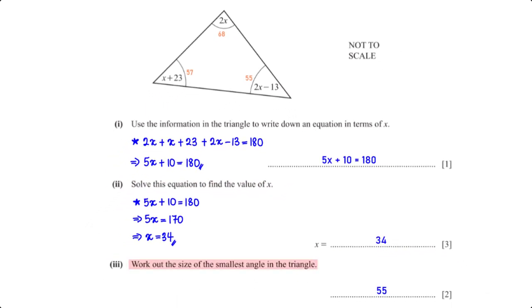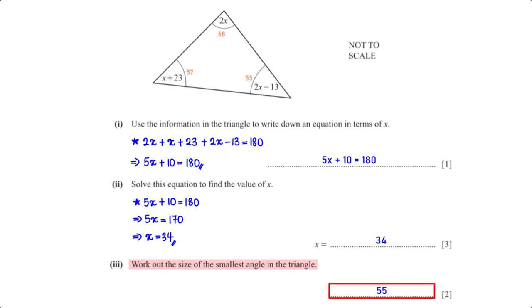Work out the size of the smallest angle in the triangle. Plugging x equals 34 into each of the three angle expressions, the smallest angle is 55 degrees.